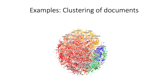We can also cluster documents. If we have hundreds of thousands of documents without any classification and we want to group them by topic, we could cluster them and hopefully find that every cluster of documents shares the same topic — for example, one cluster could be all documents about politics and another about sports.